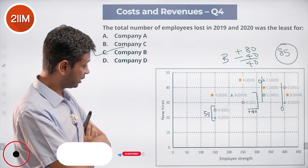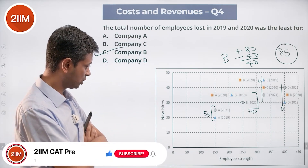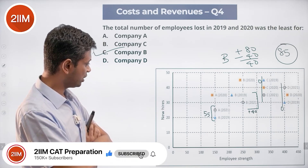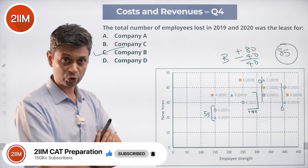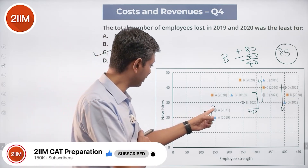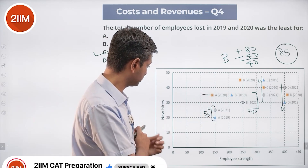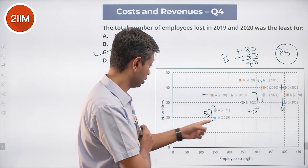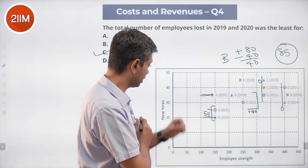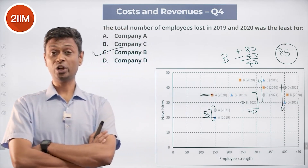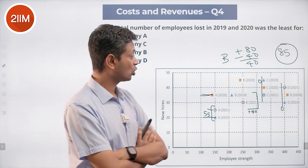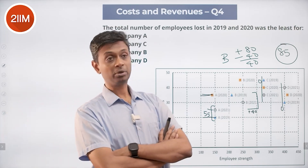Confirming: A from 2019 to 2021 has no change in headcount — they recruited 20 here and 35 here, so 55 recruited but no net change, meaning 55 people have left. B only lost 40 people. So B had the least total employees lost in 2019 and 2020.